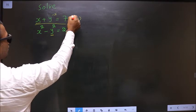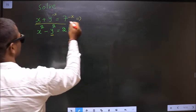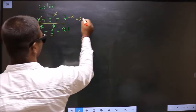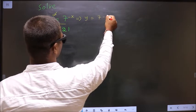For that, subtract x on both sides. So we get y equal to 7 minus x.